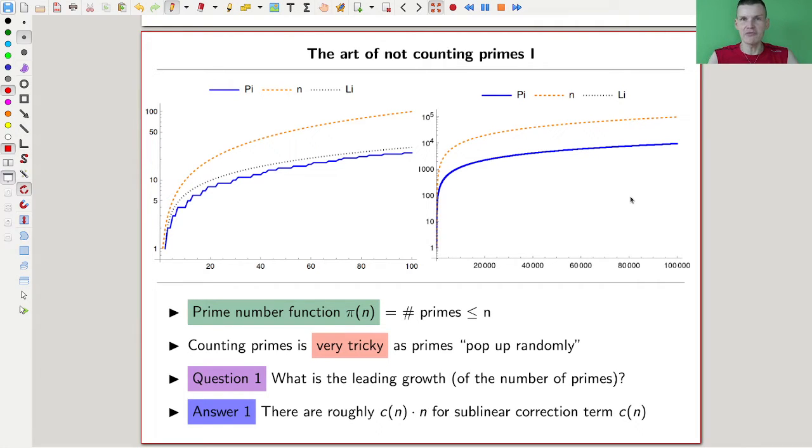So the prime counting function, the most naive thing you would write down about prime numbers, so number of primes up to a certain bound, yeah, so that's really difficult, kind of the blueprint example of, or the prototypical example of something that is really, really difficult, because kind of primes, primes are random, primes are random, they're just random, they pop up randomly essentially.